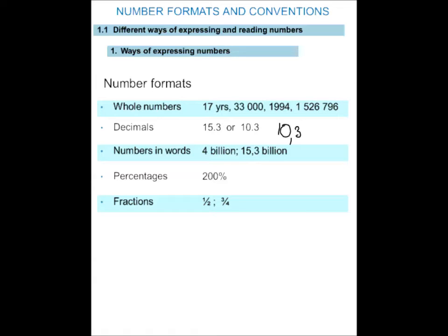Numbers in words, for example 4 billion, 15.3 billion. We also use numbers to express percentages, and it's a good time now to make sure you understand that we can get a percentage that is greater than 100%. You can get a number that is 200% or something that is 200% better or 200% worse. The other formats are fractions. Half of the class got A's. Three quarters of the rugby team passed their fitness test.